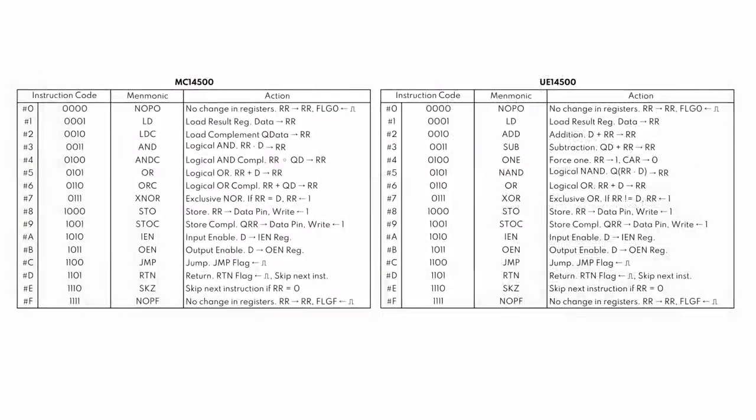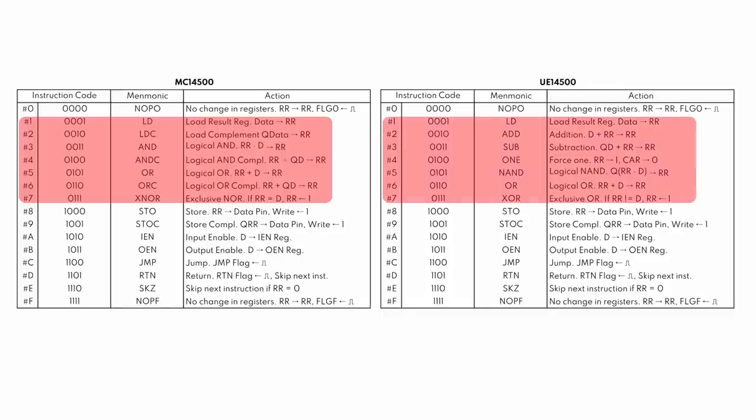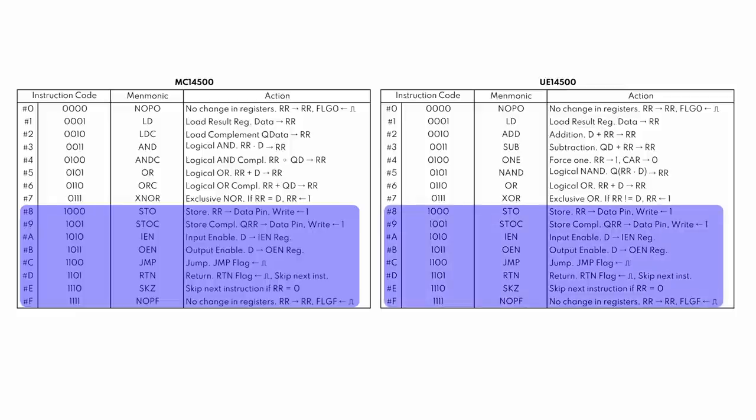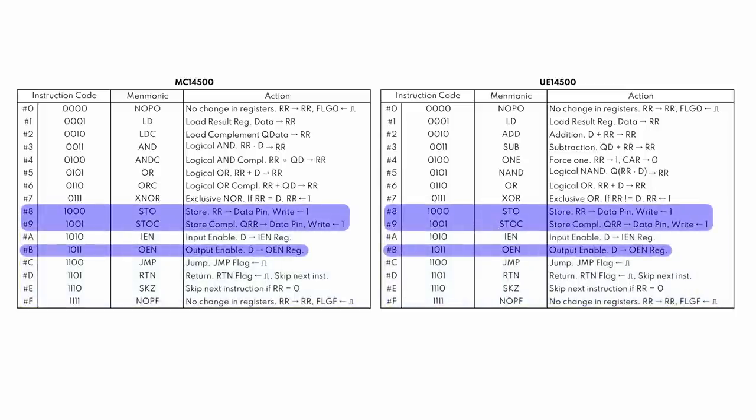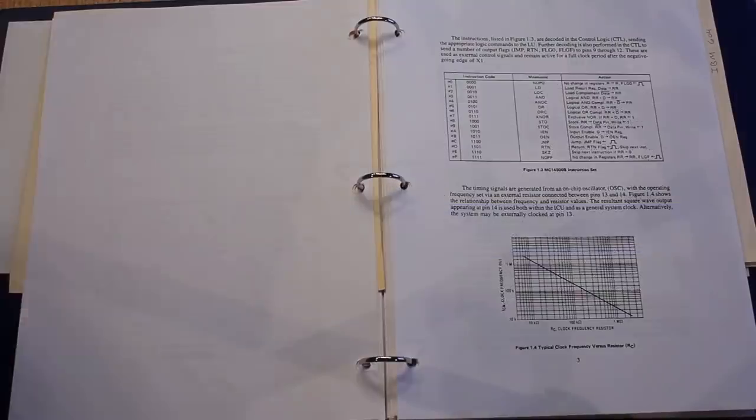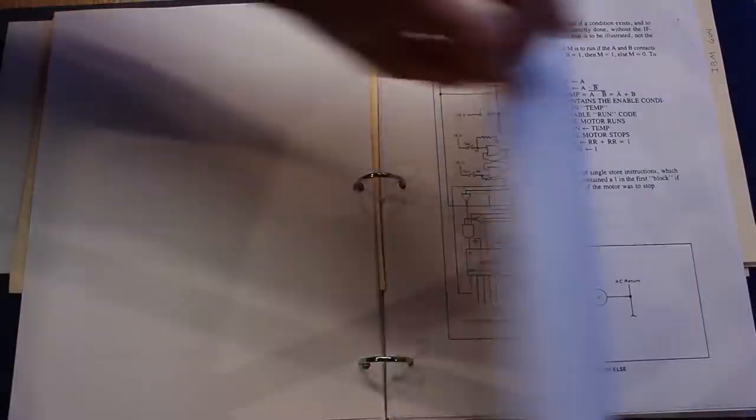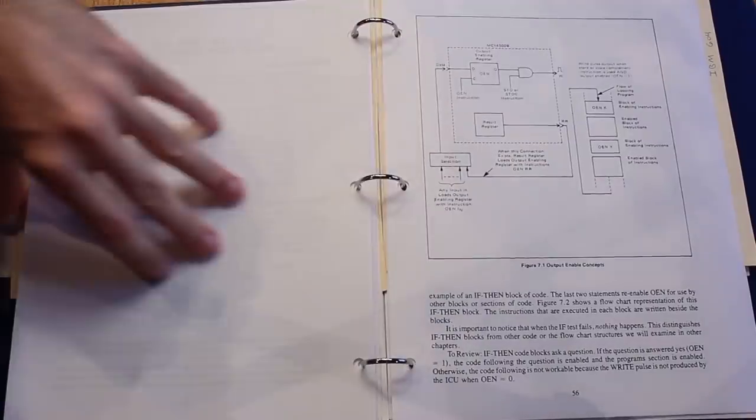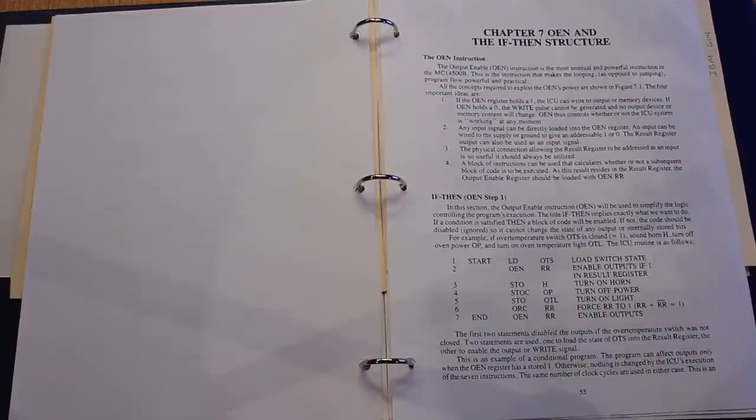Now the UE14500, the vacuum tube version we're building, the instructions are a little bit different. Most notably from instruction 0001 all the way up to instruction 0111 are totally different because that's now relating to our new ALU. But from instruction 1000 on, these are all the same. Most importantly, we have an STO and an STOC, as well as an OEN instruction. These three instructions are going to enable us to do conditionals. OEN in particular is extremely important for achieving this.